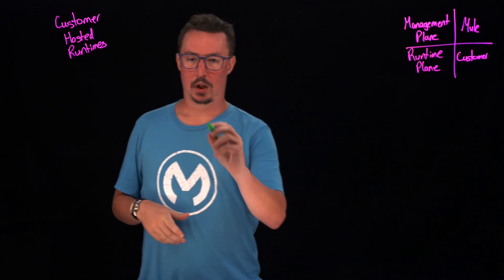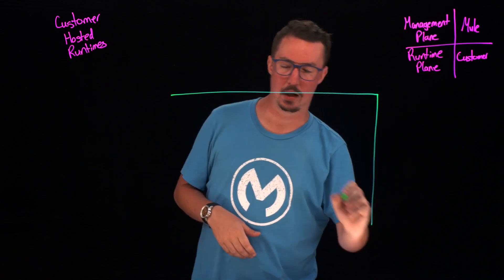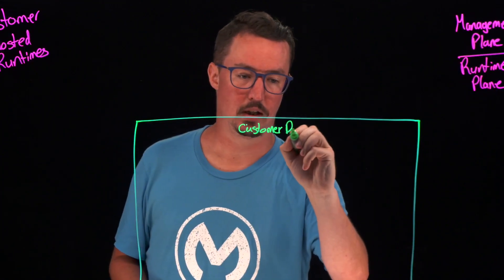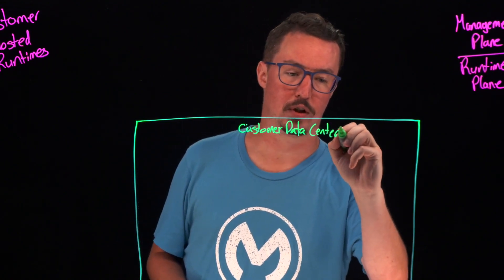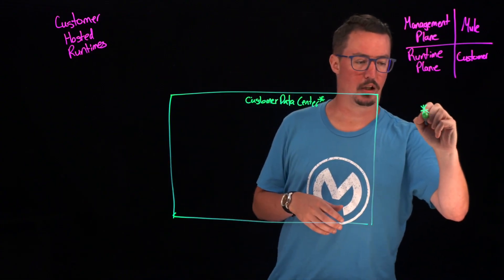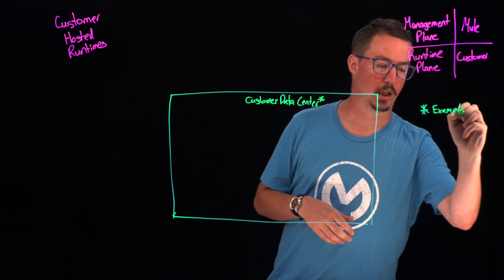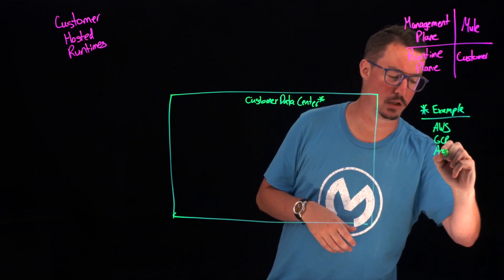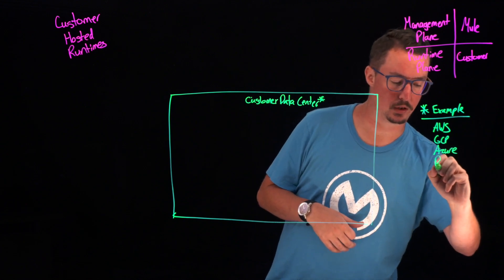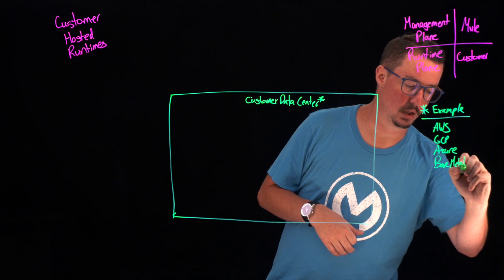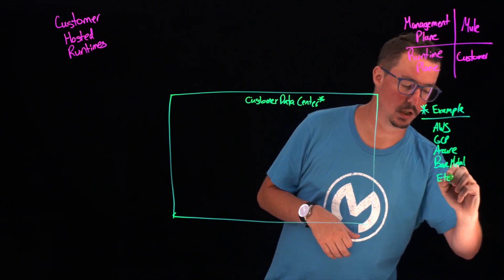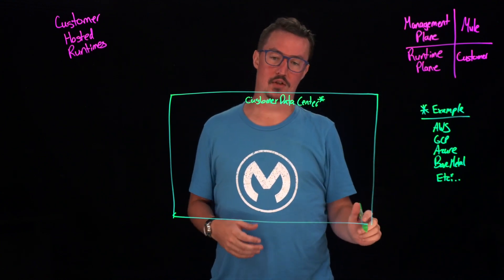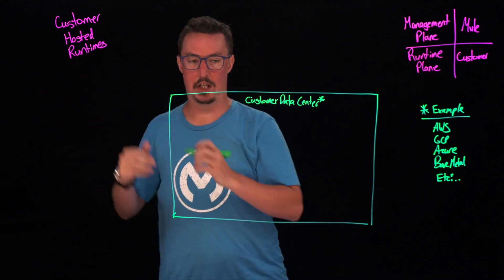Today we're going to be discussing the customer data center, and I want to clarify that a little bit. When I say customer data center, this can refer to a bunch of different things. Some examples of what a customer data center could look like include Amazon's AWS, Google's GCP, Azure, or simply a bare metal server — there could be lots of other options. MuleSoft really doesn't care where the customer data center is; we just want to make sure you have internet connectivity so you can connect up to the management plane from these data centers.